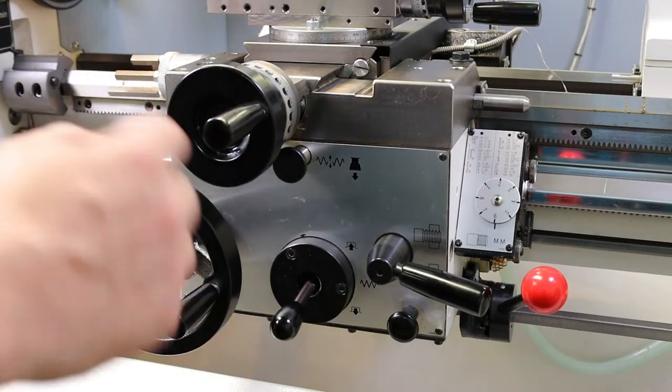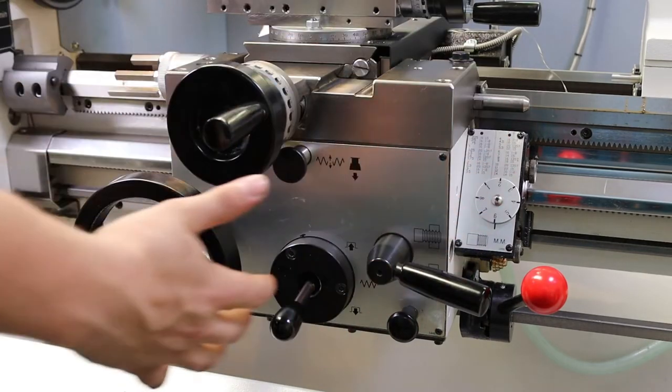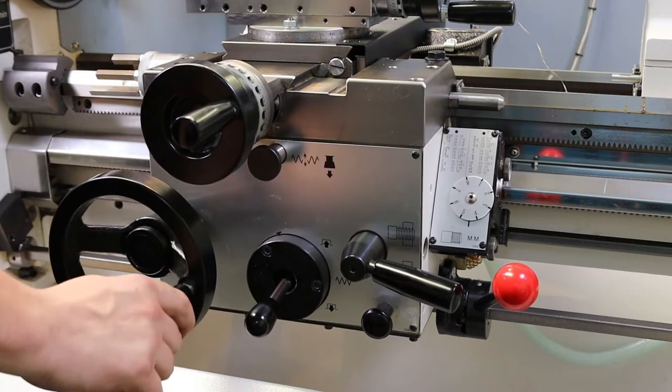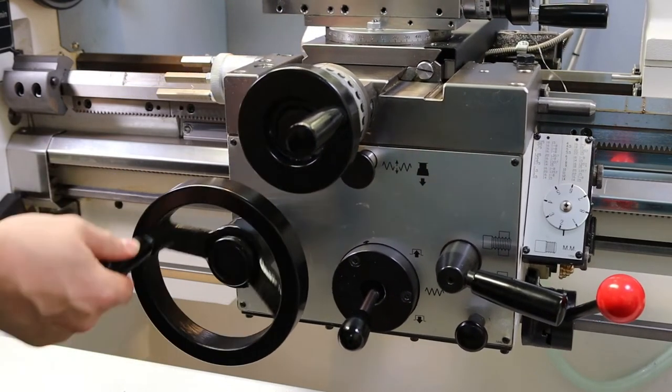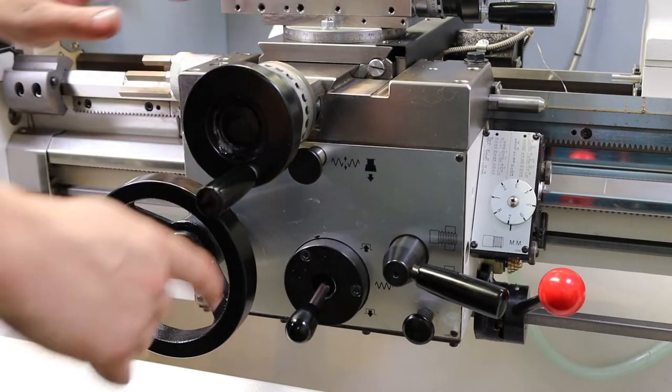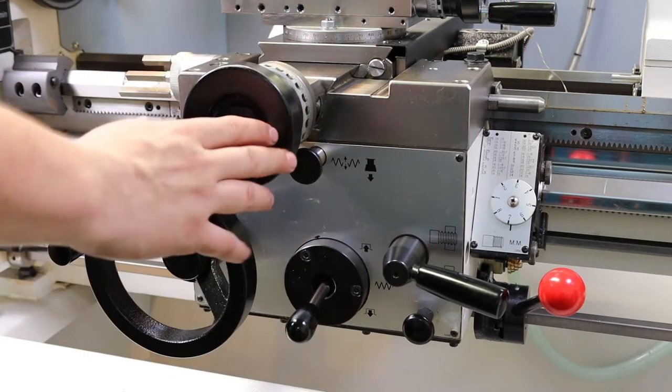The next part we need to talk about is the apron. This is the front of the carriage, and this is where the hand wheels live for the bed. The main carriage itself - we can control the movements with a big hand wheel. The smaller hand wheel controls the cross slide, as we spoke about previously.